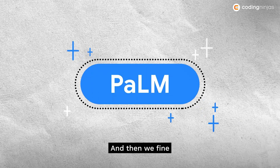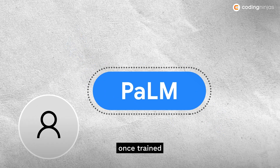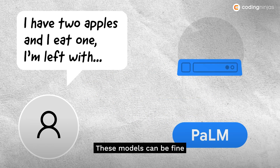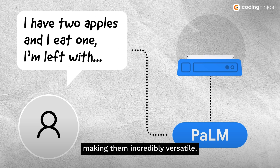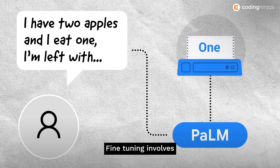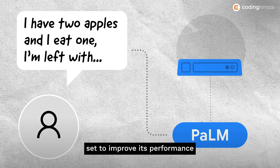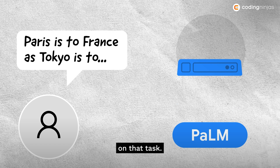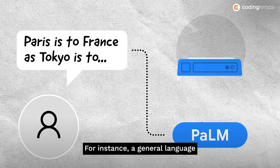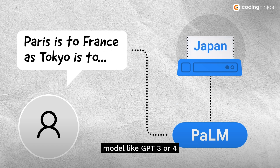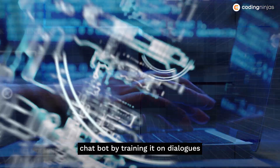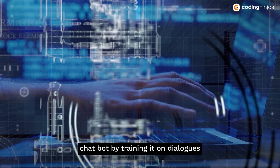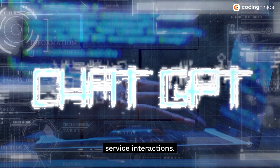Then we fine-tune for specific tasks. Once trained, these models can be fine-tuned for specific tasks, making them incredibly versatile. Fine-tuning involves training the model on a smaller, task-specific dataset to improve its performance on that task. For instance, a general language model like GPT-3 or GPT-4 can be fine-tuned to create a customer service chatbot by training it on dialogs from customer service interactions.